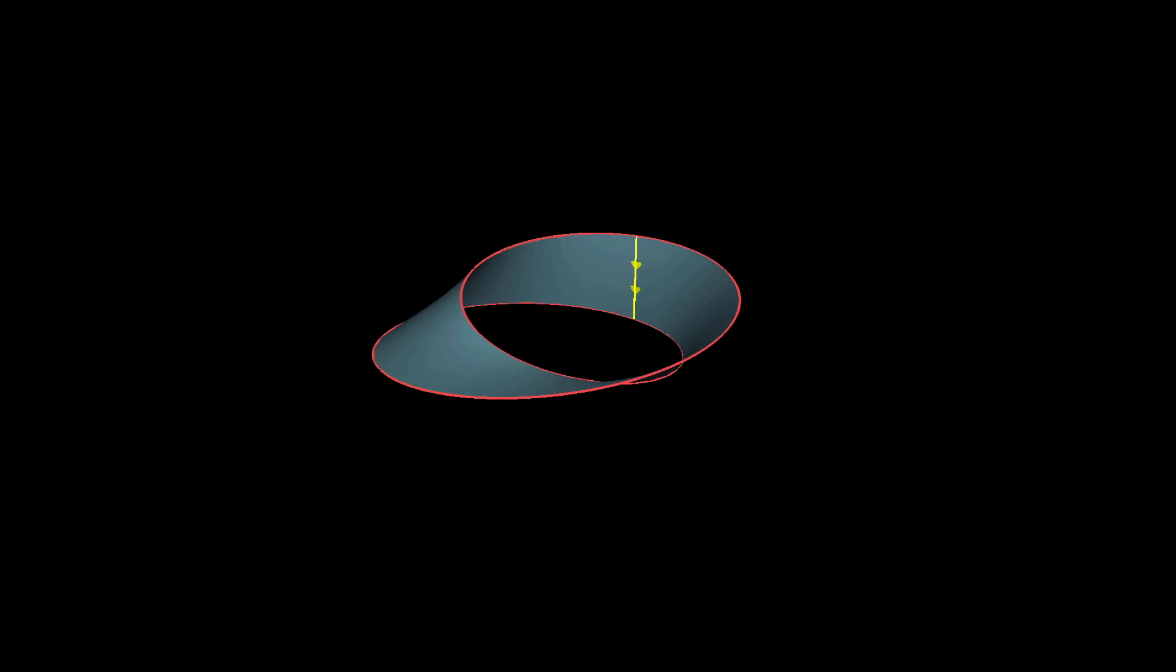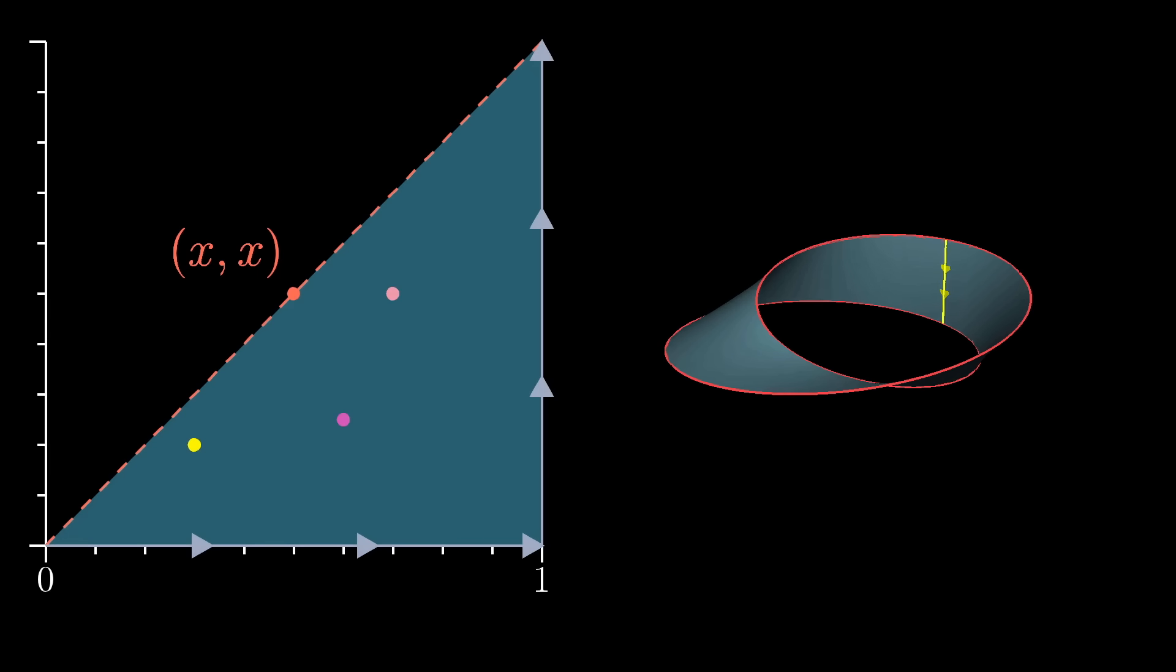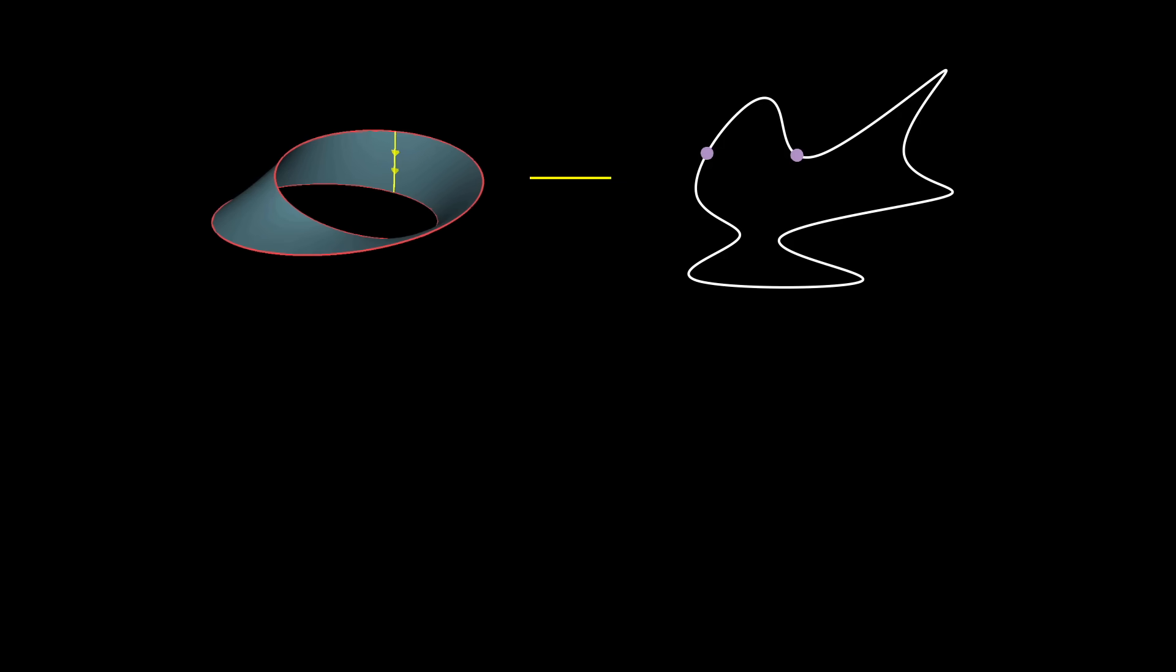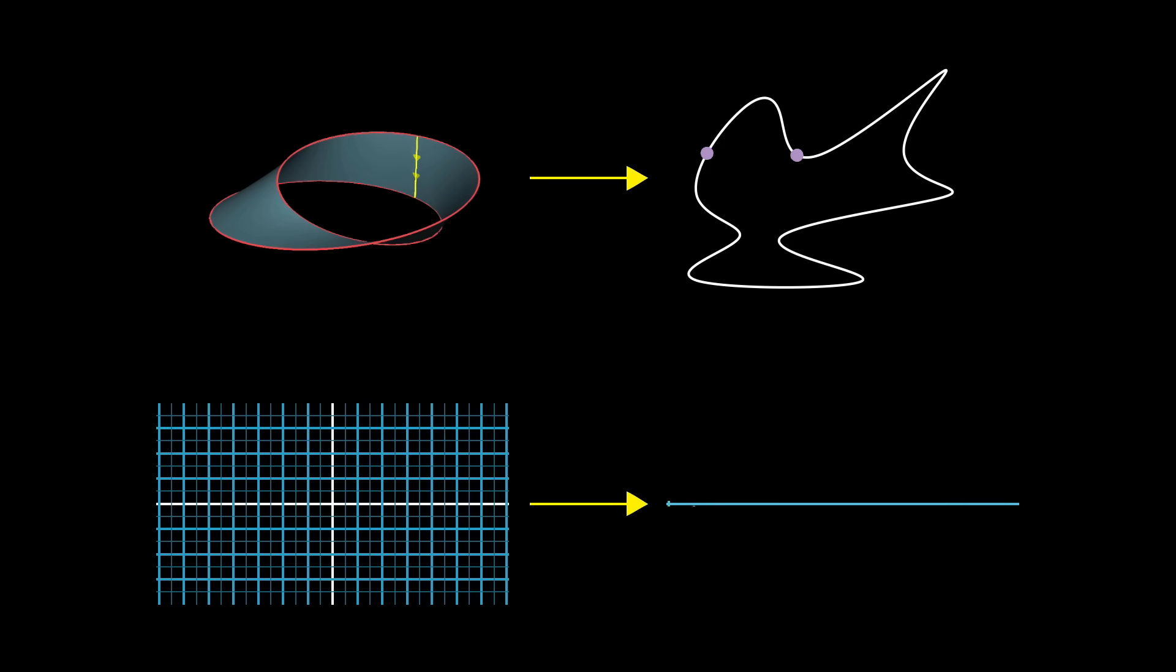And notice, the edge of the strip, shown here in red, represents the pairs of points that look like XX, those which are really just a single point listed twice. The Mobius strip is to unordered pairs of points on the loop, what the XY plane is to pairs of real numbers. That totally blew my mind when I first saw it.